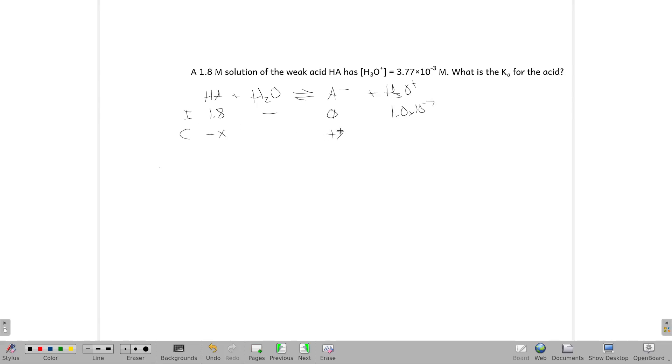A needs to go up, so we know both of our products are going up. So at equilibrium, we have 1.8 minus X, we have X, and we have 1 times 10 to the negative seventh plus X.